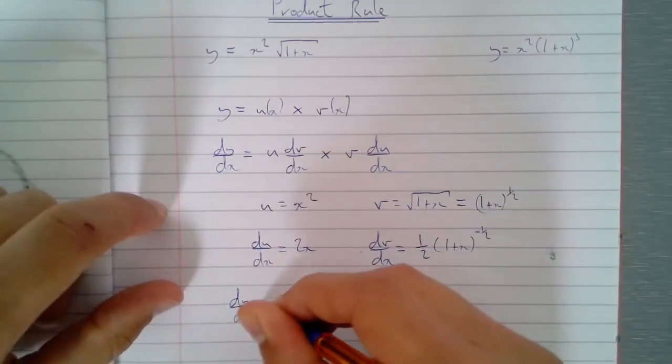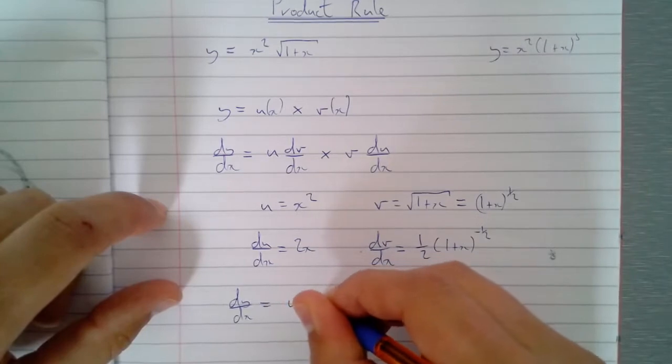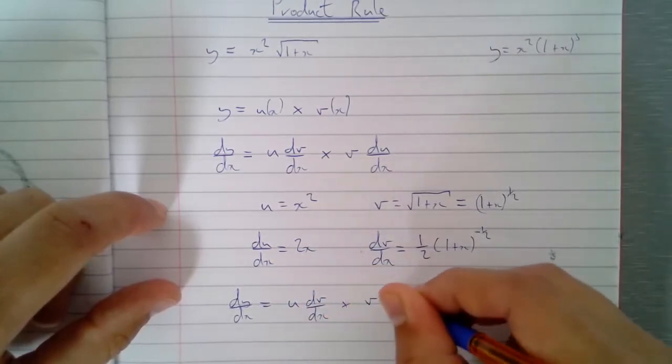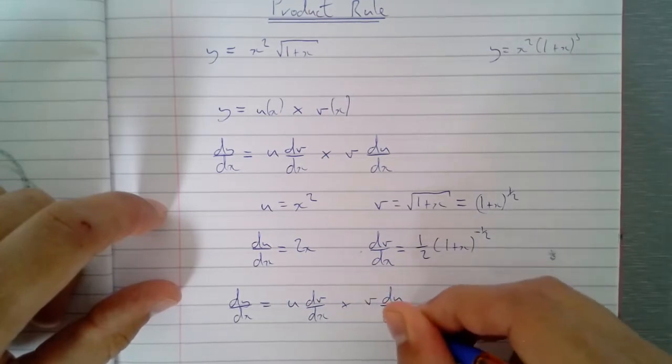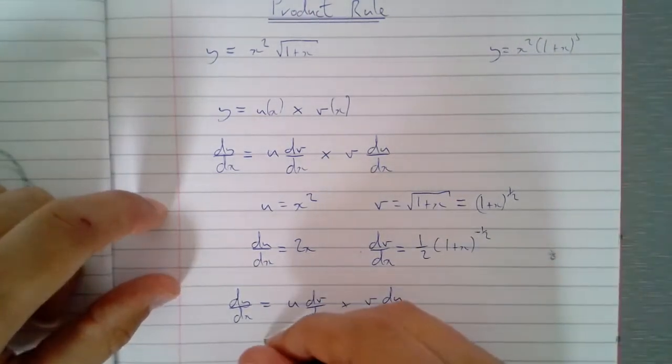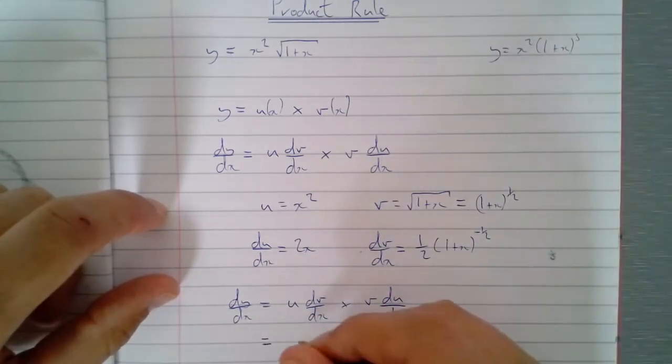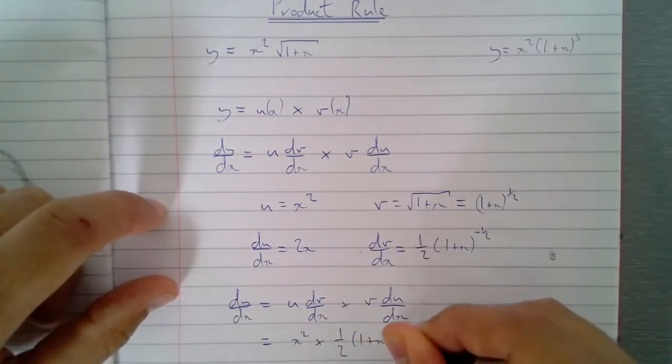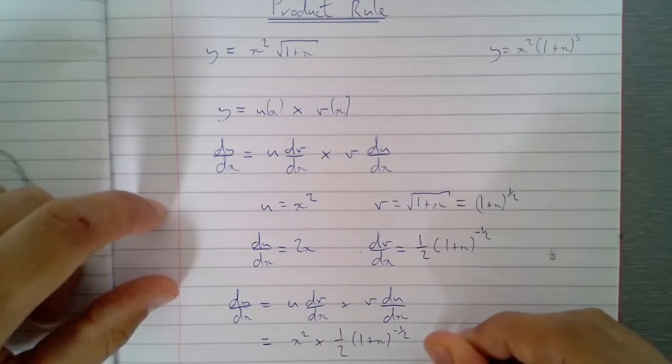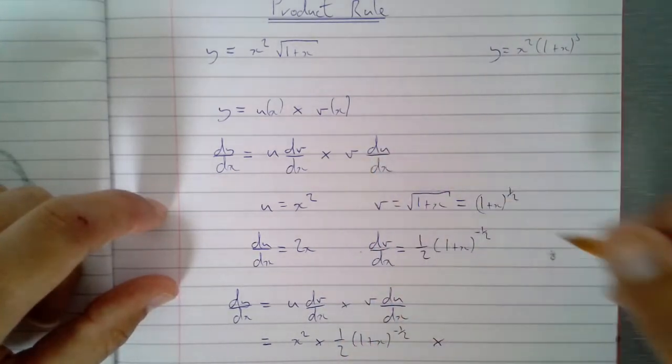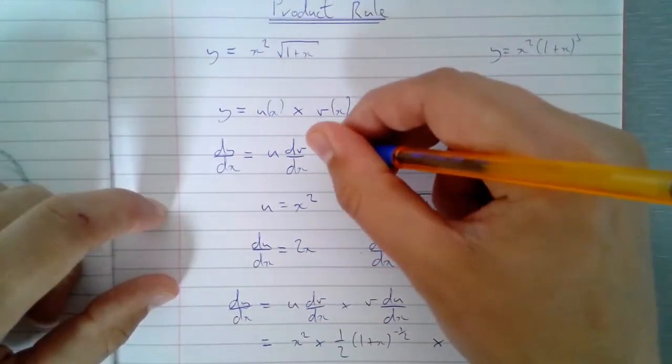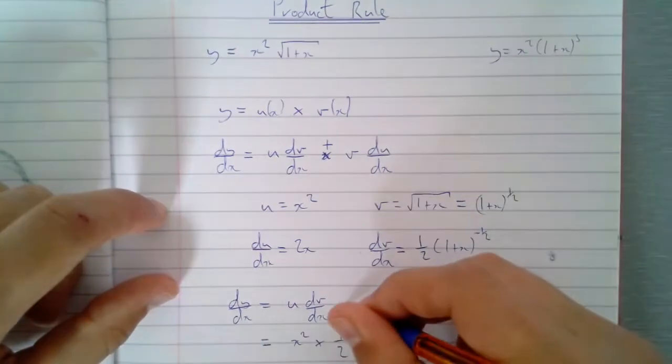So now I've decided what u and v is, I've differentiated them both, I can now say okay well dy/dx is u dv/dx times v du/dx. u is x squared times a half one plus x to the minus a half times... oops, that's all wrong. What am I doing?